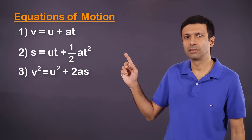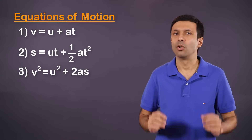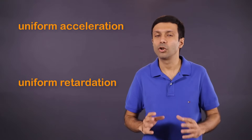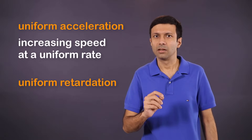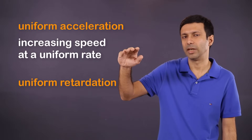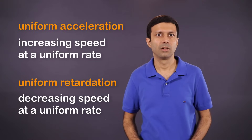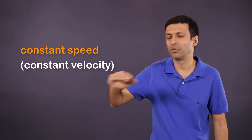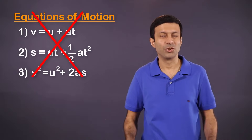So when can we apply these equations? Can you use them for any moving body? The answer is no. These equations work for uniformly accelerated motion or uniform retardation. Uniform acceleration means the body is increasing its speed at a uniform rate, and uniform retardation means the body is losing speed at a uniform rate. We'll look at some examples later on. But if the body is moving at a constant speed or constant velocity, you don't need these fancy equations — you can use the simple equations.